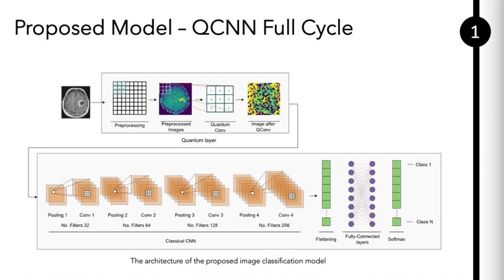Our study preprocesses images by resizing them to 28 by 28 pixels and normalizing them to 0 to 1 range, mitigating data distribution and scale disparities. After normalization, the images pass through a quantum convolutional layer followed by classical layers and a fully connected layer for classification.